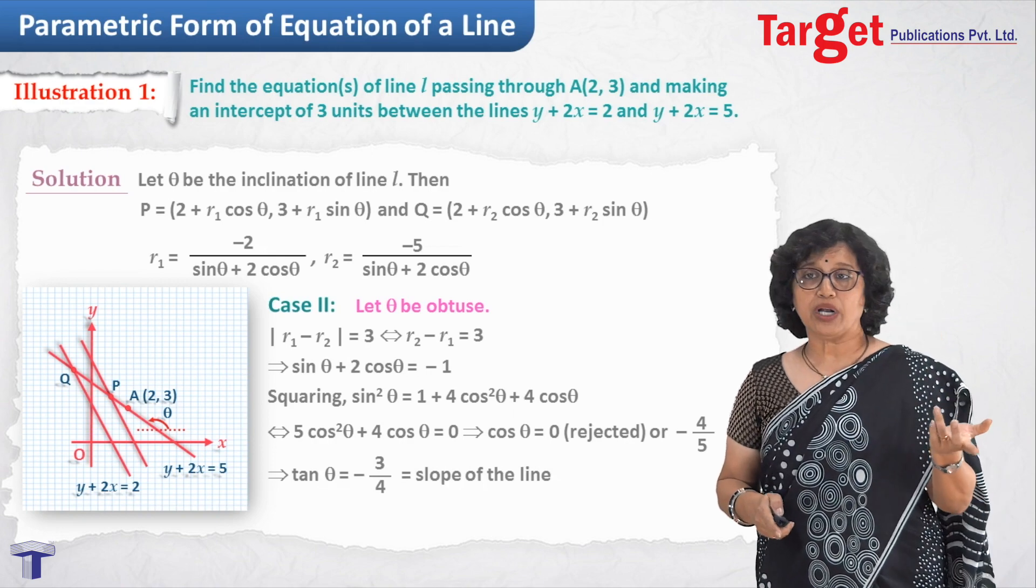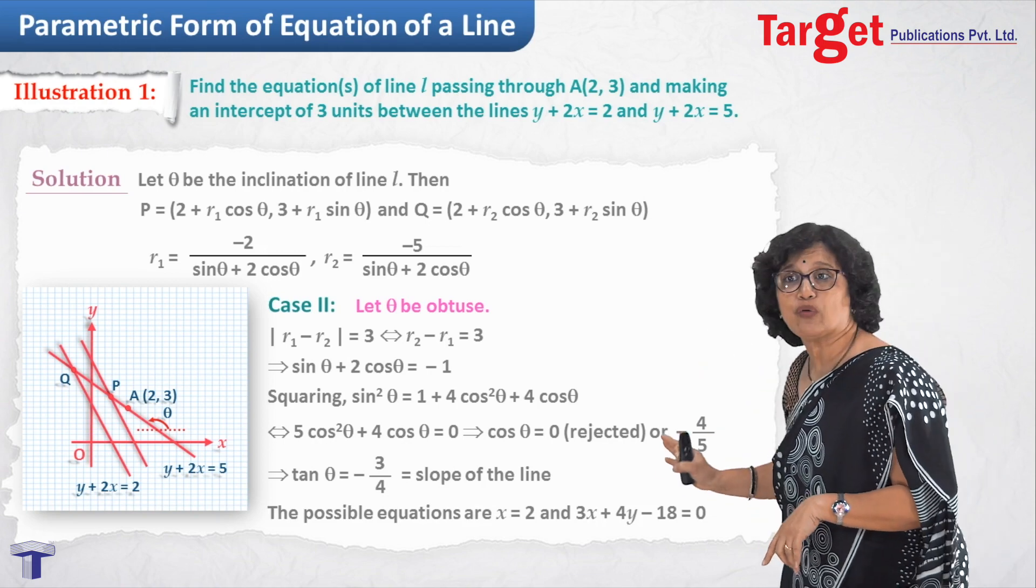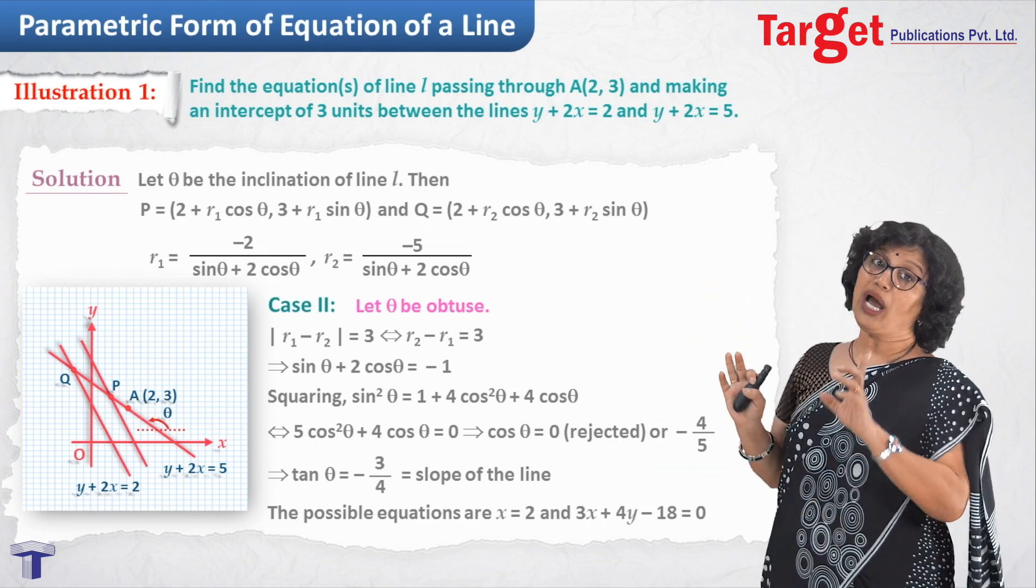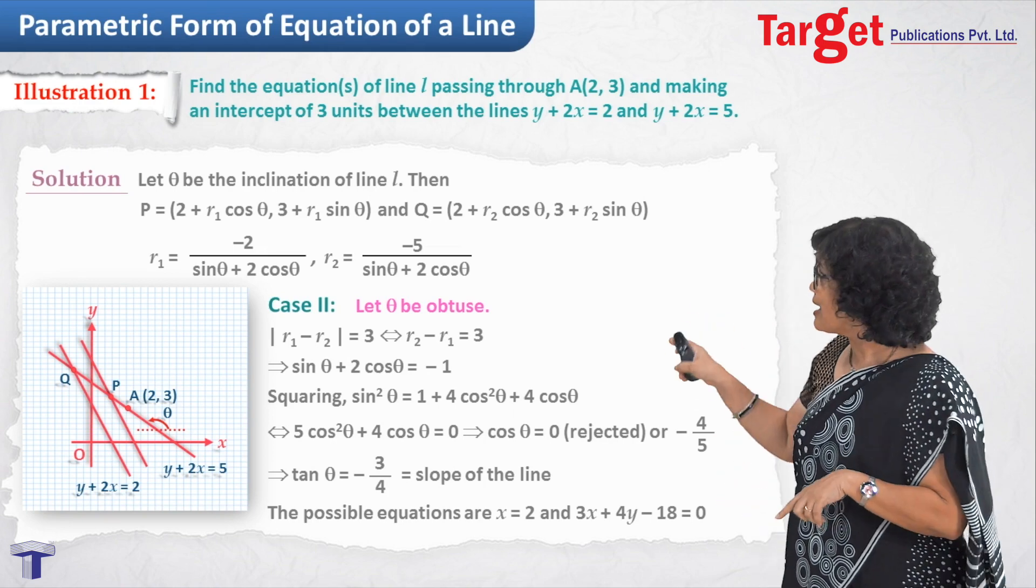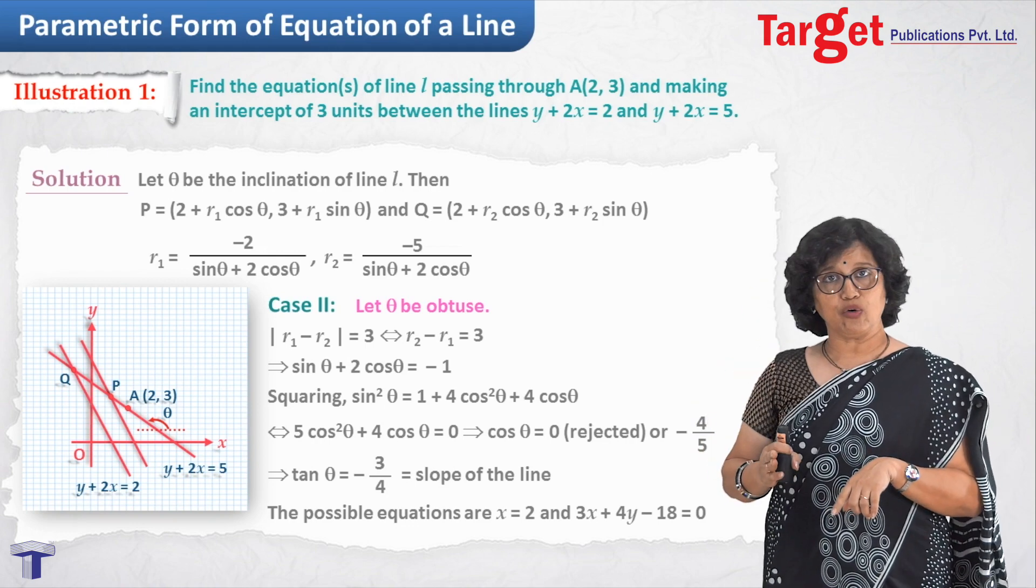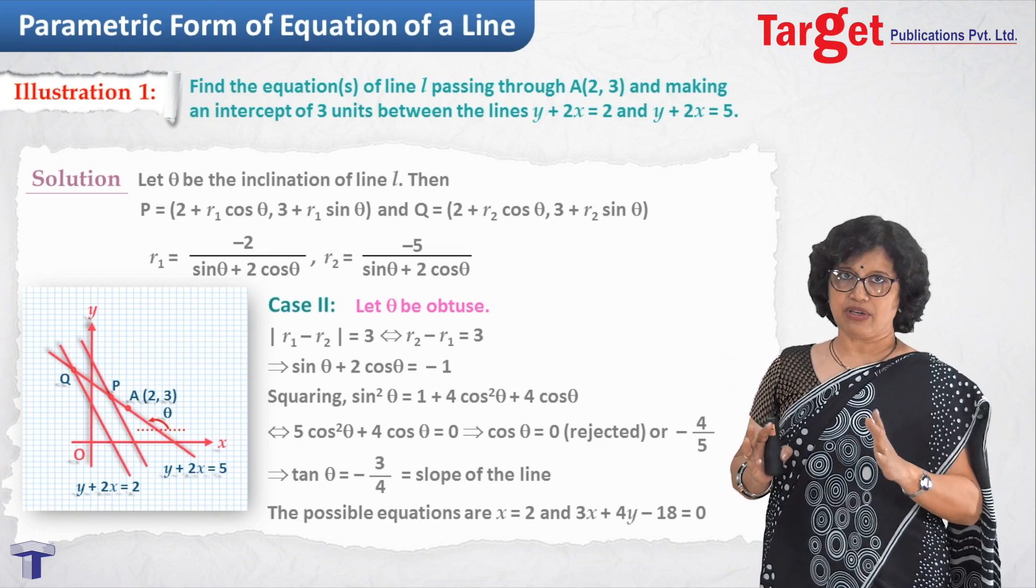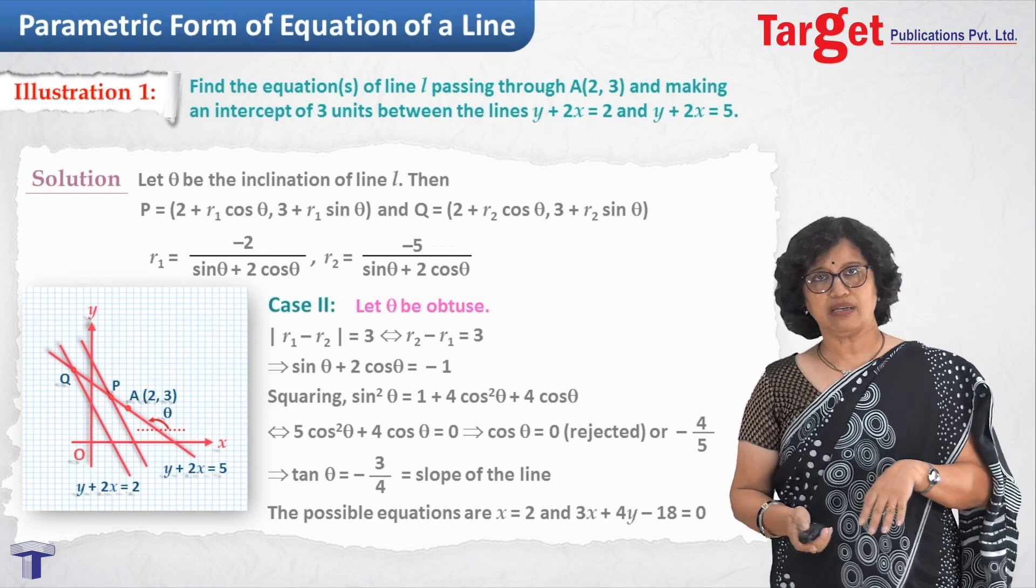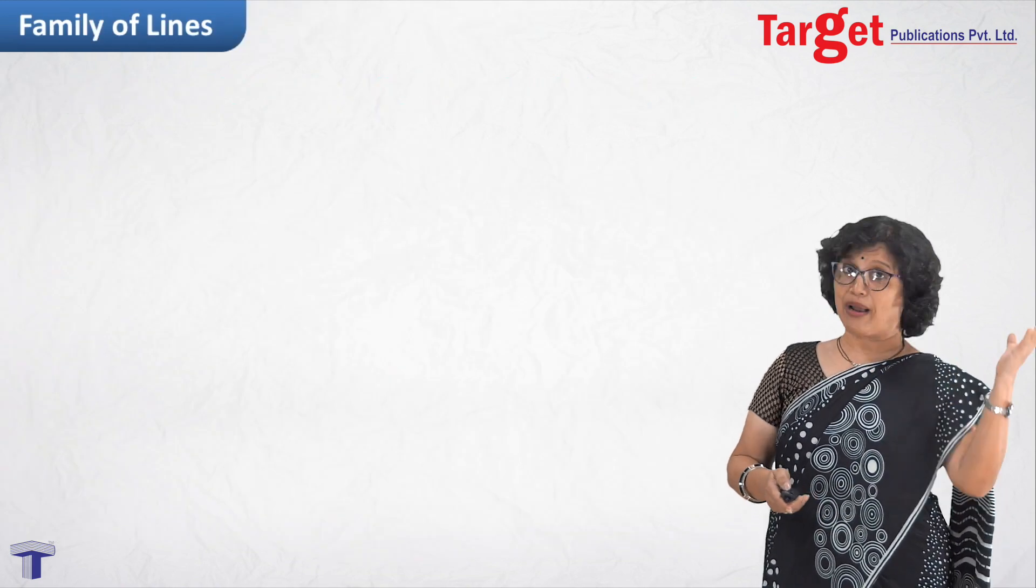Now, slope is known to me. Point is already known to me. So, I can write equation of the line as 3x plus 4y minus 18 equal to 0. And the other case was line parallel to y-axis that leads to x equal to 2. Because line passing through A which is (2, 3) and parallel to y-axis has to be given as x equal to 2. So, there are two possible equations of the line which satisfy the given condition. I think this is enough for the parametric form.